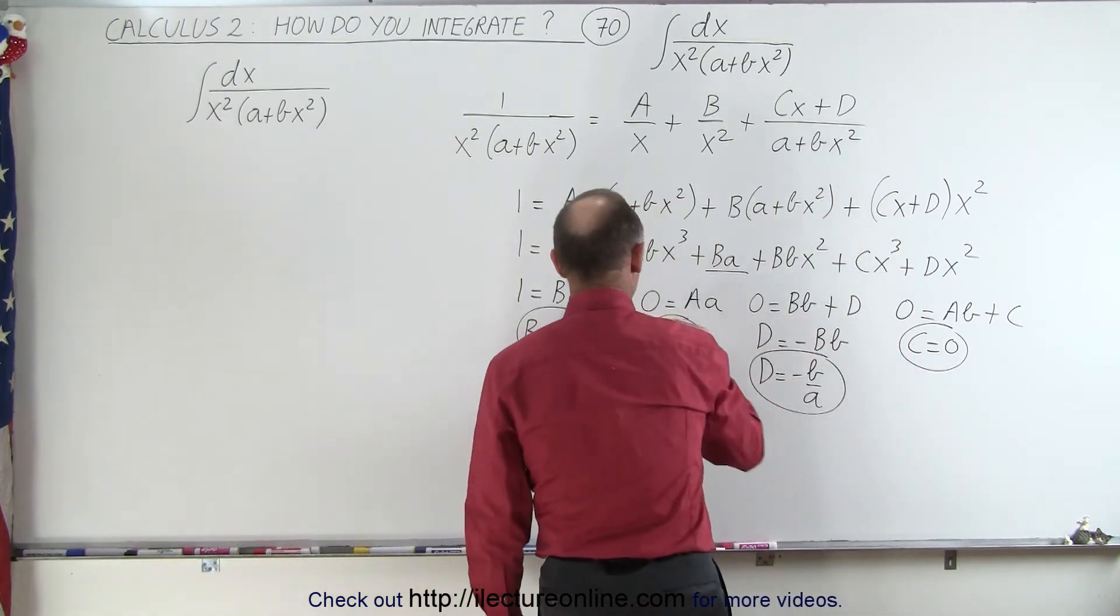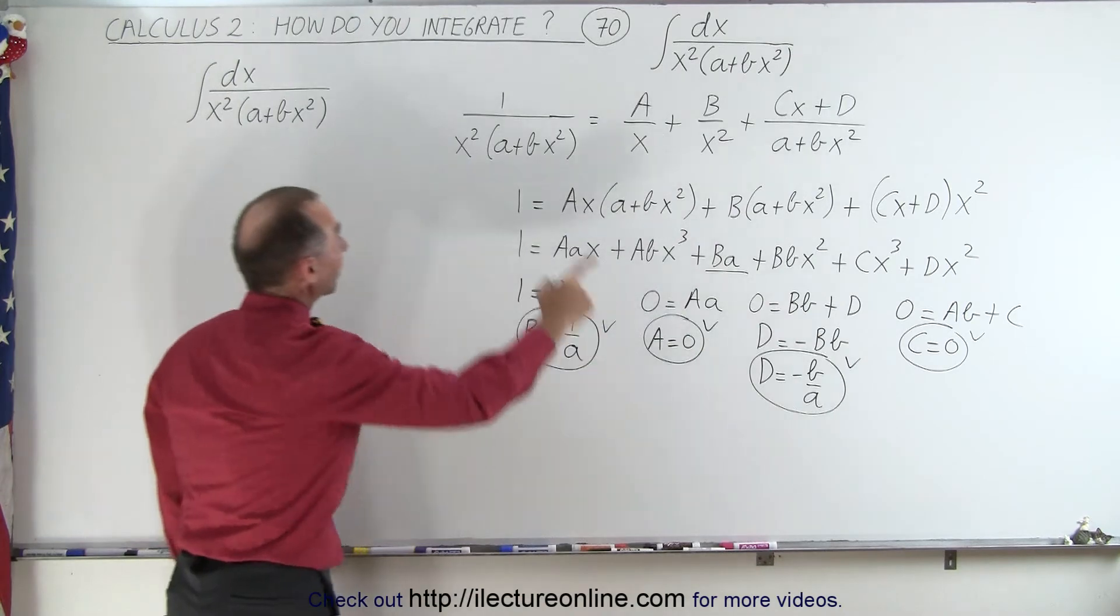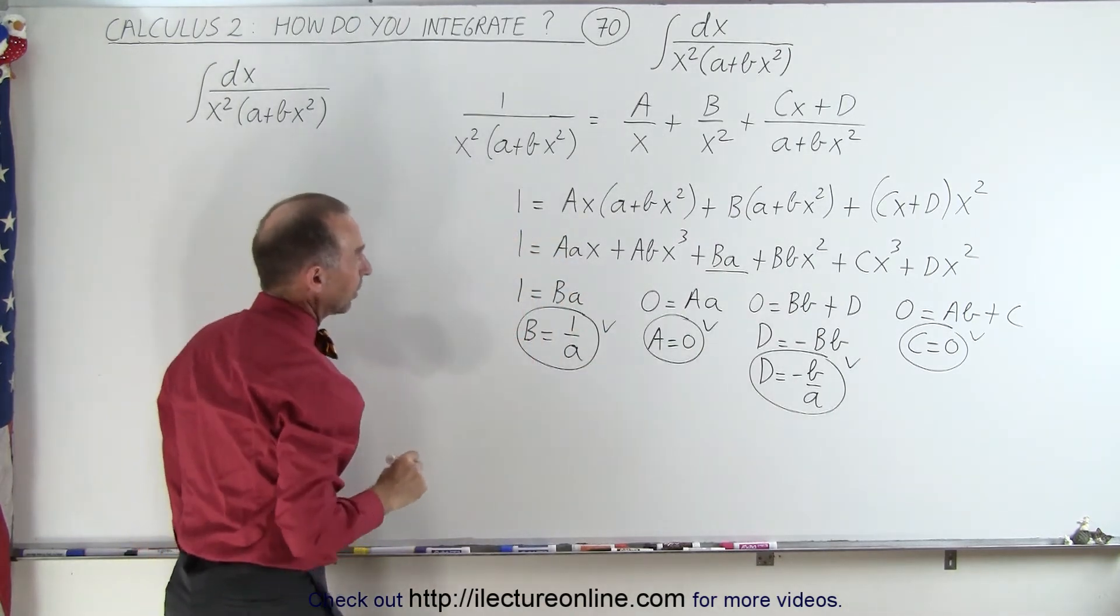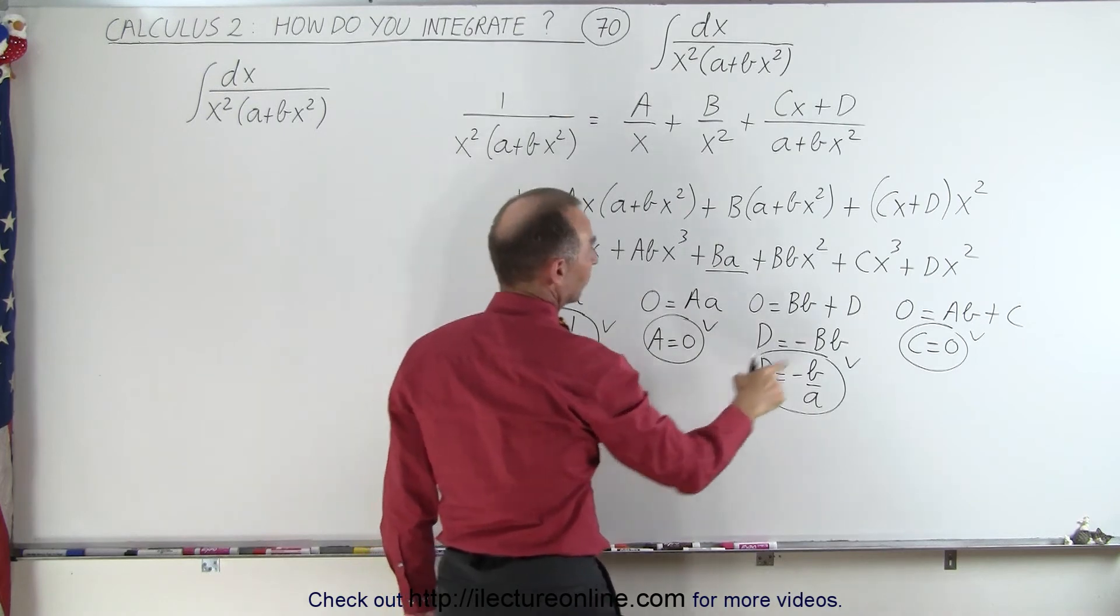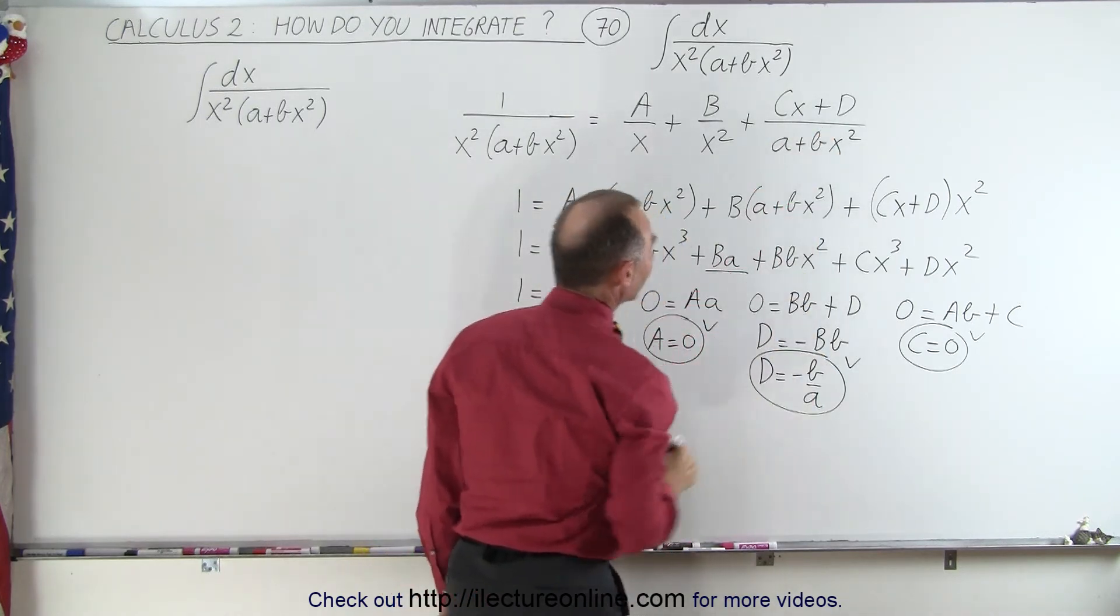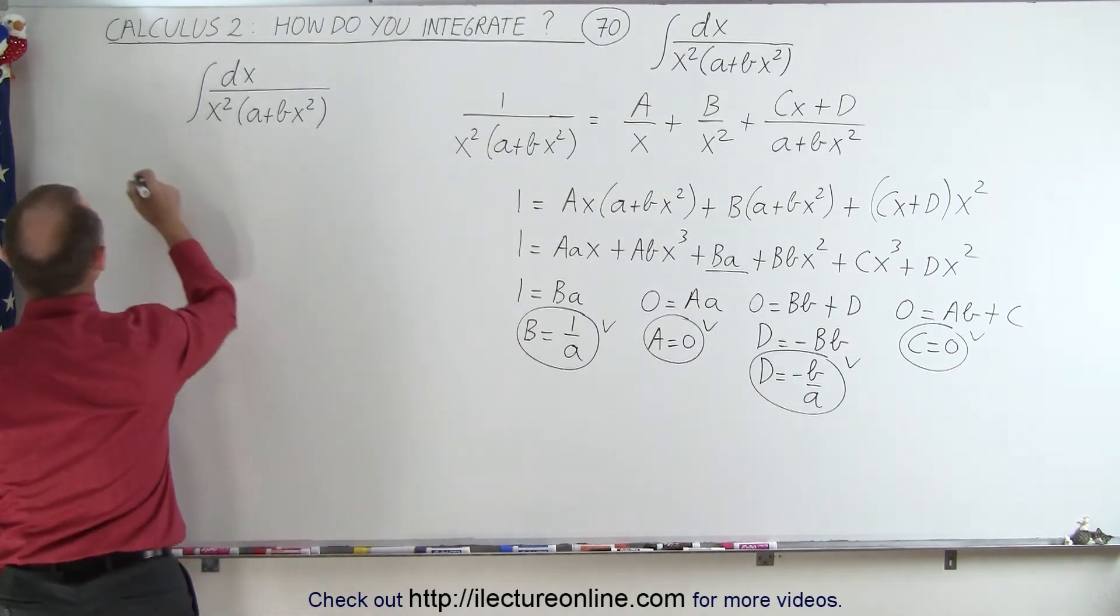And so that means we have all four constants. We can plug that into our constants up there. So A is 0, B is 1 over a, C is 0, and D is minus B over a. So that means that this integral can now be written as the sum of two integrals.